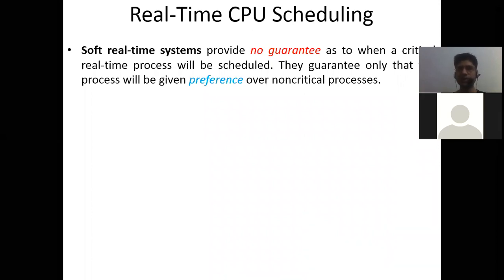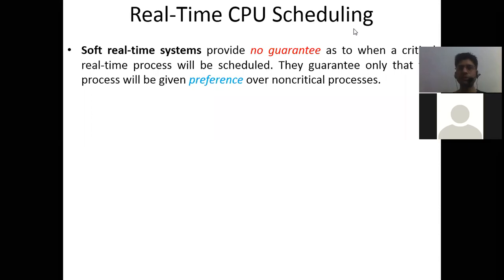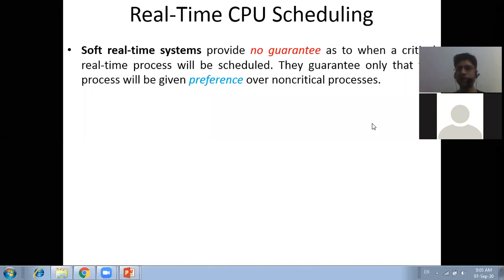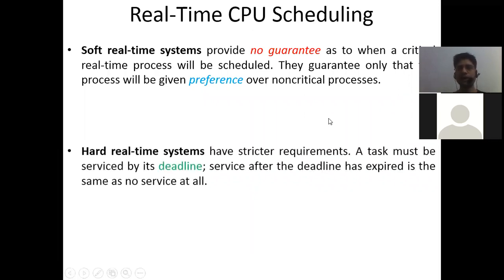In a soft real-time system, we cannot guarantee that a process will be executed within a given time frame, but we will assure that it gets preference over non-critical processes — such as batch processes running in the background. The algorithm designed for soft real-time systems can only provide this preference over non-critical processes.